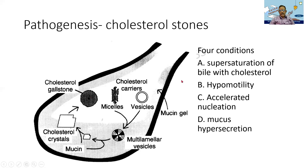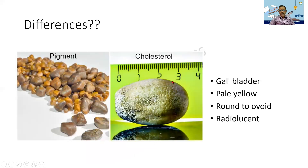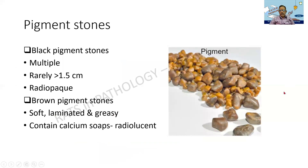The cholesterol stone is usually solitary or few in number, whereas pigment stones are multiple. They are darker and have got a faceted appearance. The cholesterol stone is pale yellow, round or ovoid, and it is radiolucent. Pigment stones are multiple, small — rarely more than 1.5 centimeters. There are black pigment stones and brown pigment stones. Sometimes the stones can be greasy, and because of the calcium soaps, they appear radiolucent.